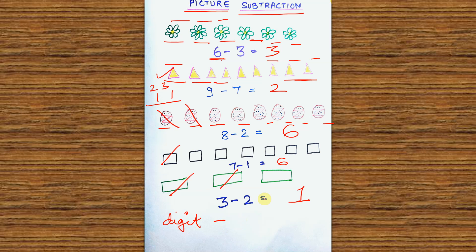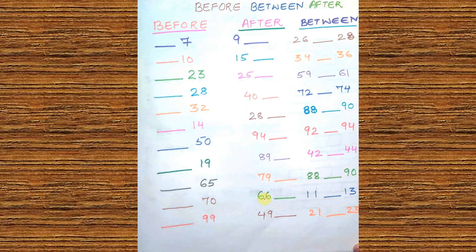Now we will move on to our third worksheet. This is before, between, and after. As much as I have heard, children have a problem with 'between.' Before and after they can do again, but between gives them problems. So I have structured it as before, after, then between.